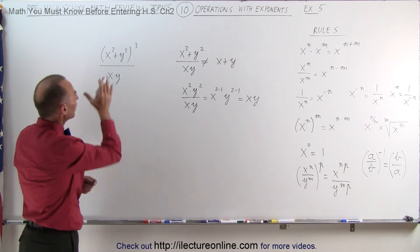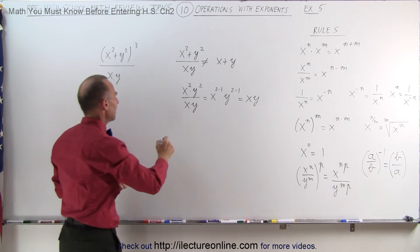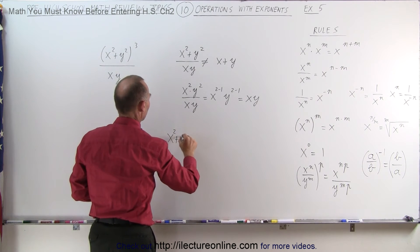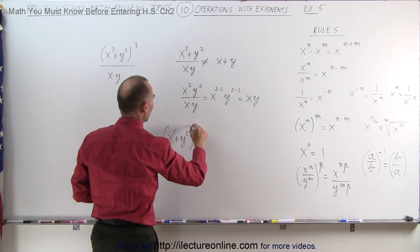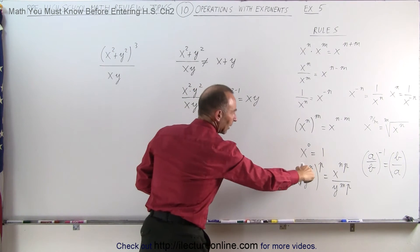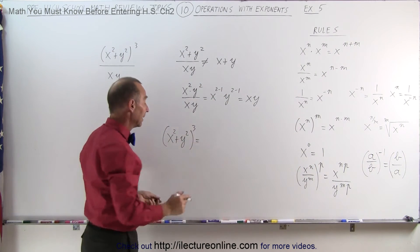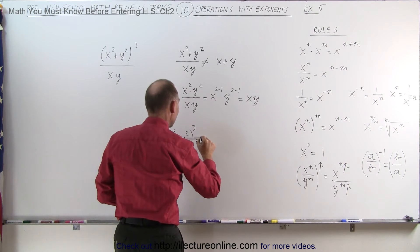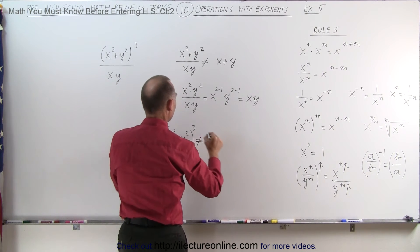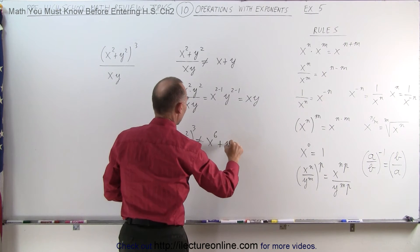Then you say, wait a minute, what about the numerator? Why can't I take x squared plus y squared and raise it to the third power like this? Because the rule right here, can I not just multiply exponents? And the answer is no, this is not equal to x to the 2 times 3, which is the 6th power, plus y to the 6th power.